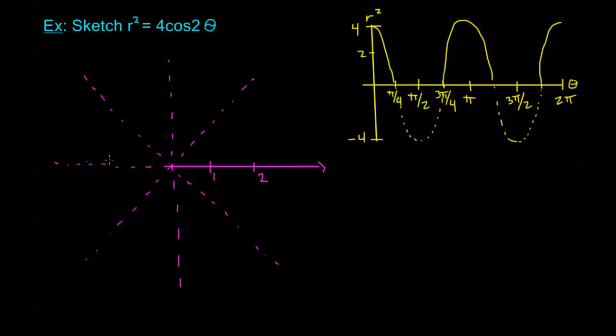Let's go ahead and change our color. From 0 to π/4, r² is going from 4 to 0. So that means r is going from 2 to 0. Starts off slowly and then speeds up dramatically.